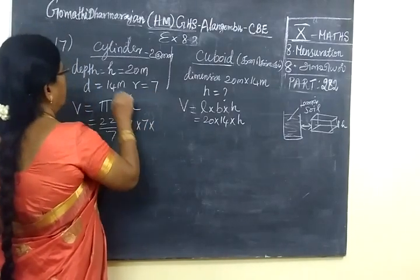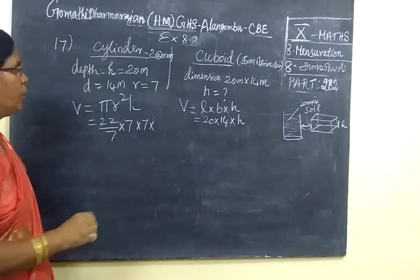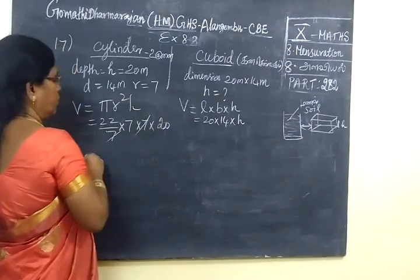So, 7x7. Depth and height. So, height is 20. So, this room will cancel.